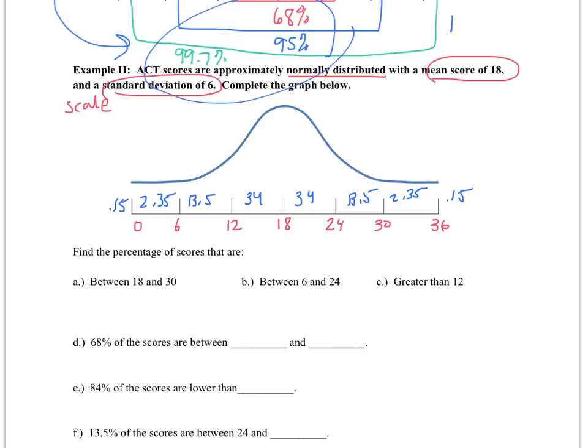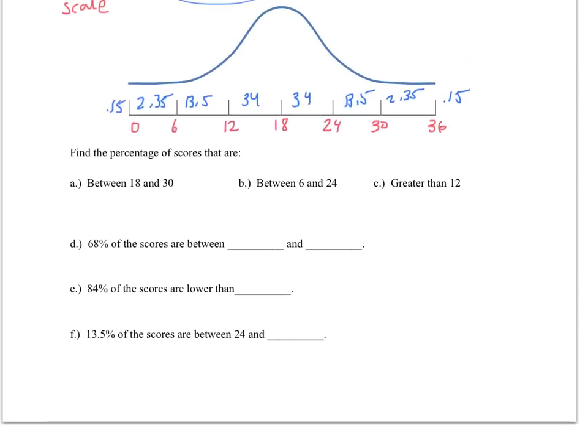Now I know you're probably wondering how in the world anybody can get above a 36 or below a zero. Well, nothing's perfect. And so this normal distribution pattern works for the majority of data. And once in a while it's just not perfect. That's the best explanation I can give there, unfortunately.